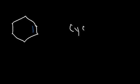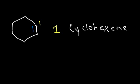Now what about cycloalkenes? What if we have a double bond in a ring — how can we name it? Instead of saying cyclohexane, this is simply cyclohexene. And if you only have one double bond in a ring, it's automatically assumed to be carbon 1. So you don't have to say 1-cyclohexene; you can just say cyclohexene because the double bond is on carbon 1.